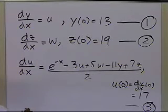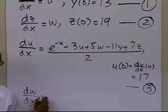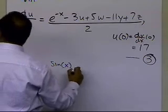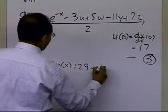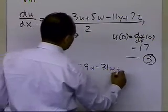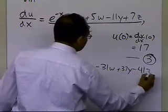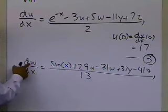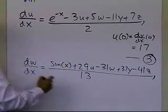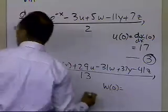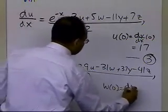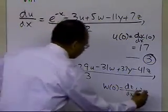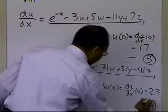My last differential equation will be dw by dx, and that will turn out to be sin of x, plus 29u, minus 31w, plus 37y, minus 41z, divided by 13. The initial condition I will need is on w, but w is not the original variable — w of 0 is nothing but dz by dx at 0, and that value is 23. That gives me equation number 4.